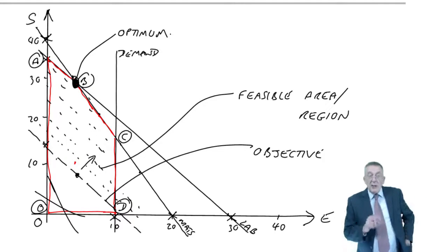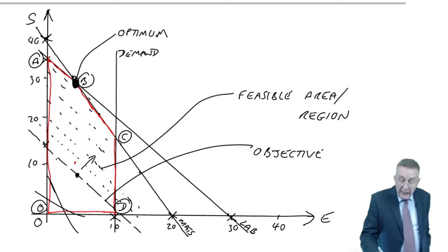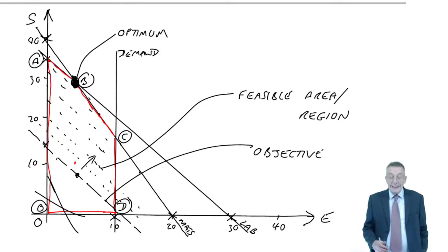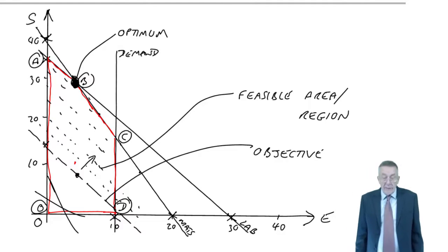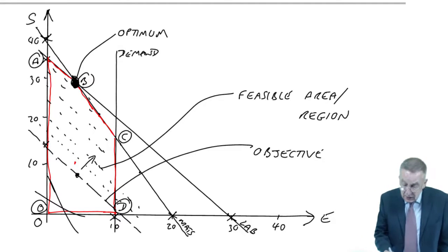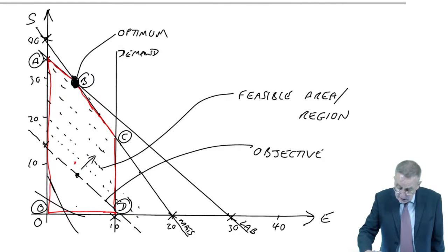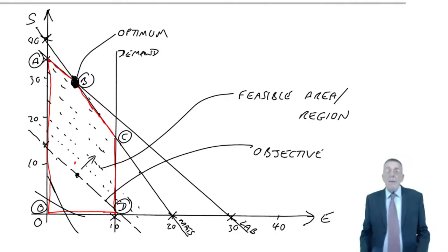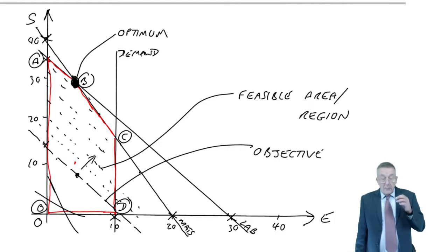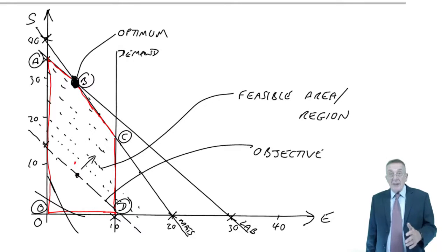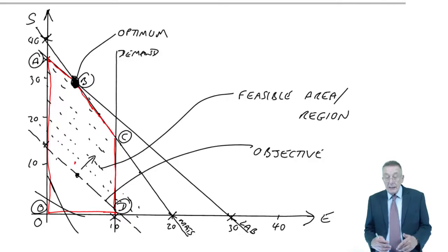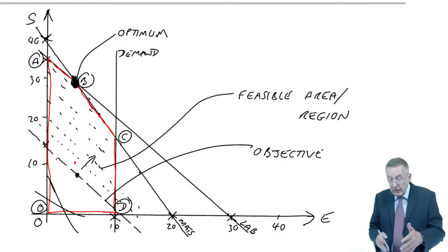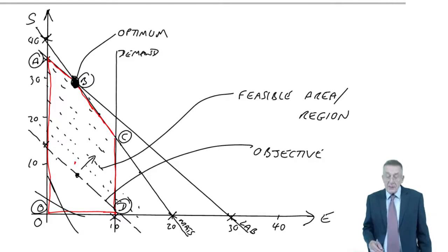But they're testing that you know that we need to move it out, keeping it parallel and find the best corner. So I do hope that made sense. But we're still not quite there, because even though it's at point B, of course, we need to know how many S's and how many E's that represents. And it's too dangerous to read off the graph.